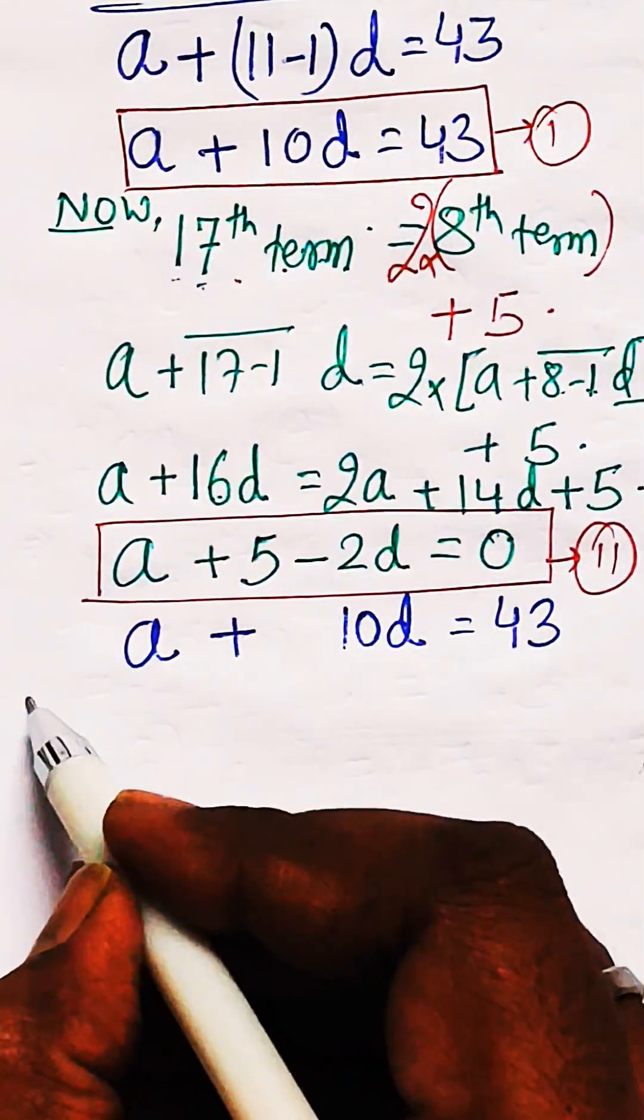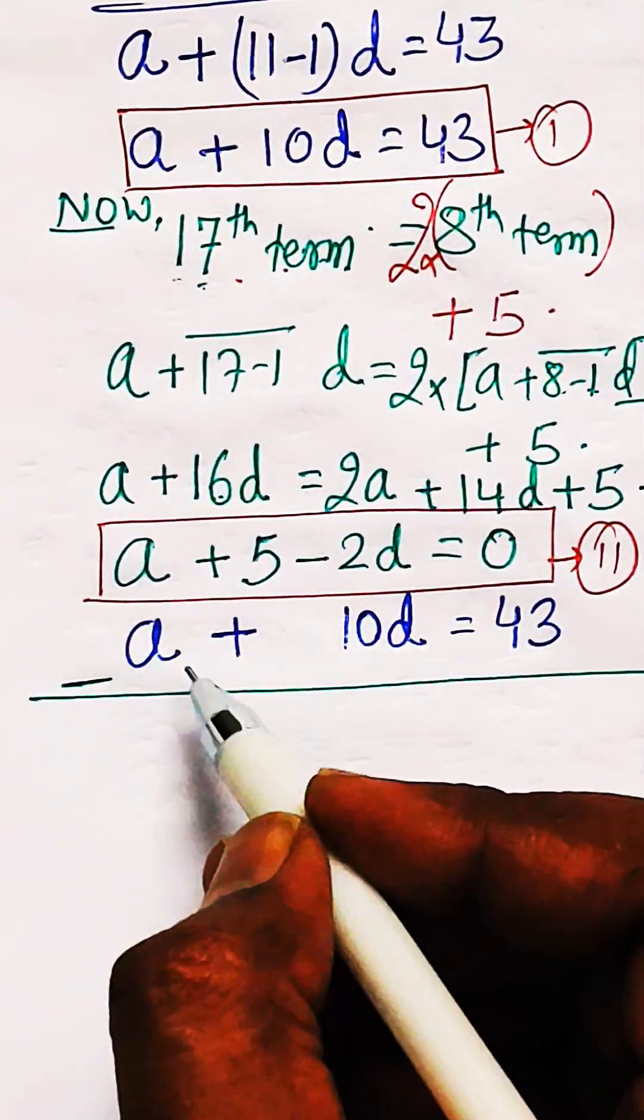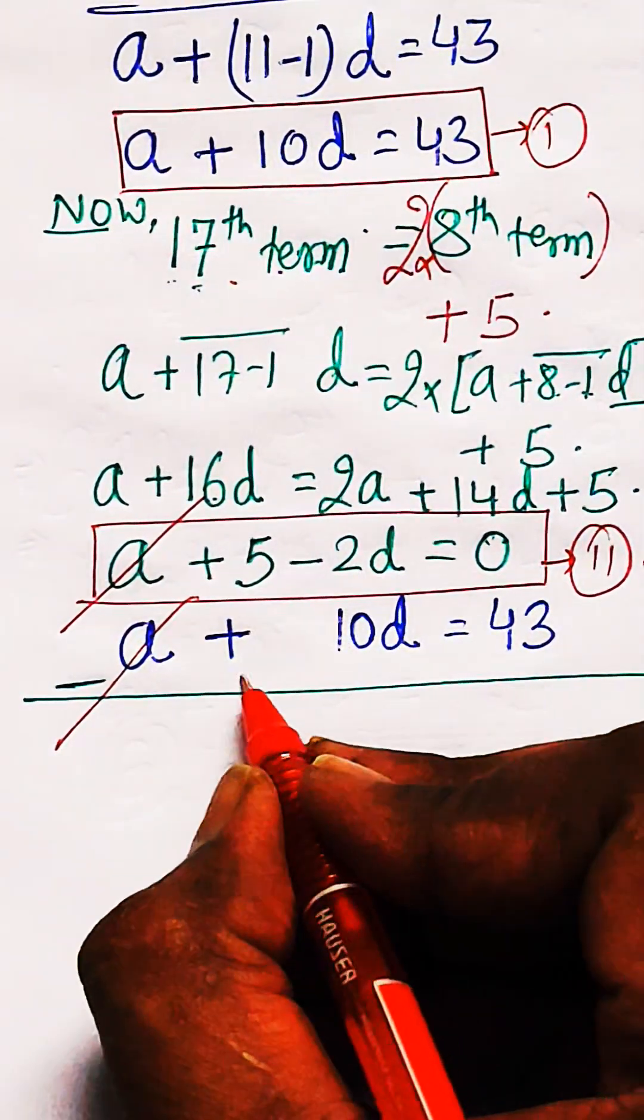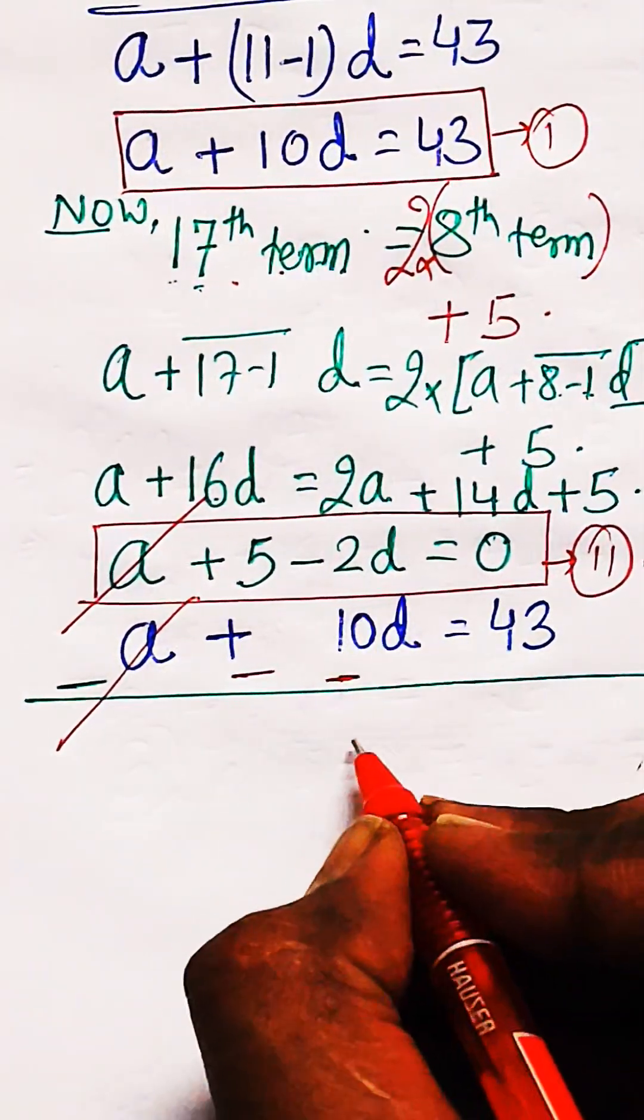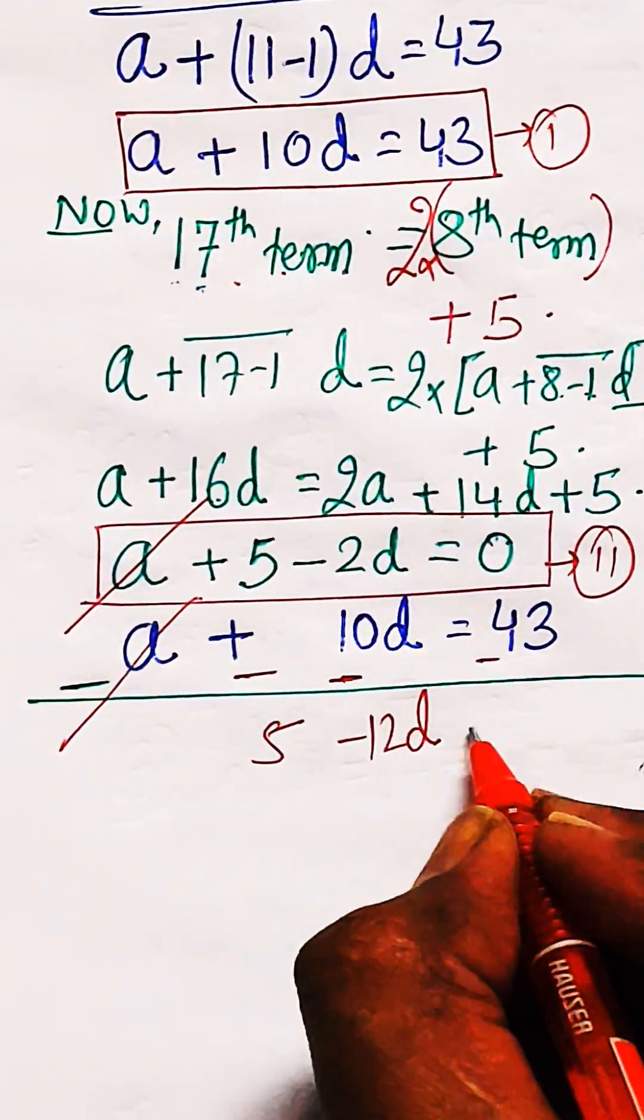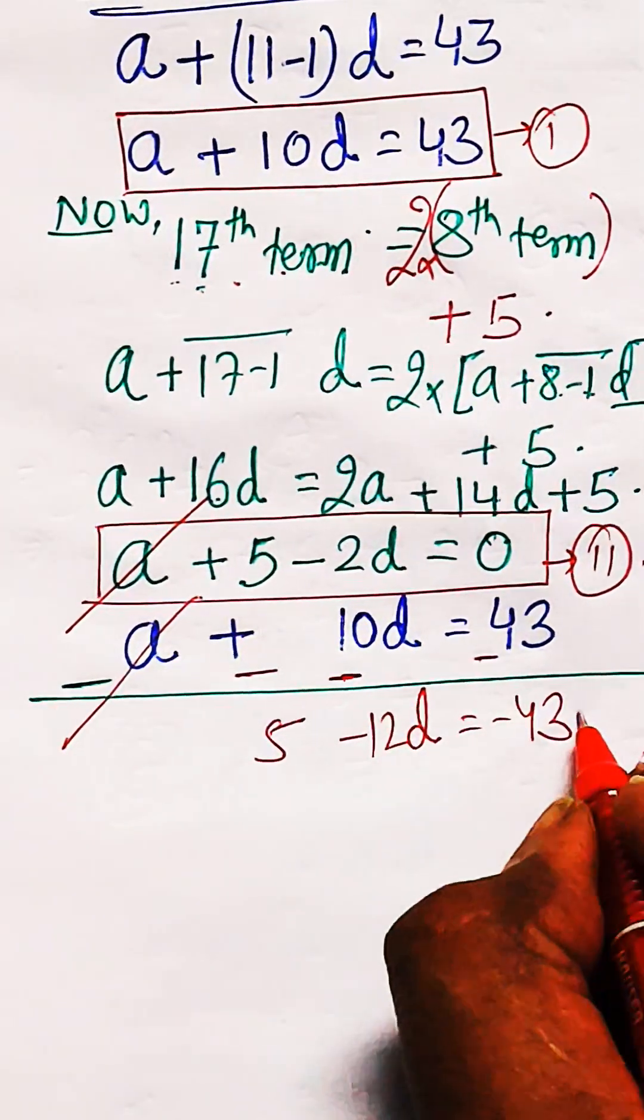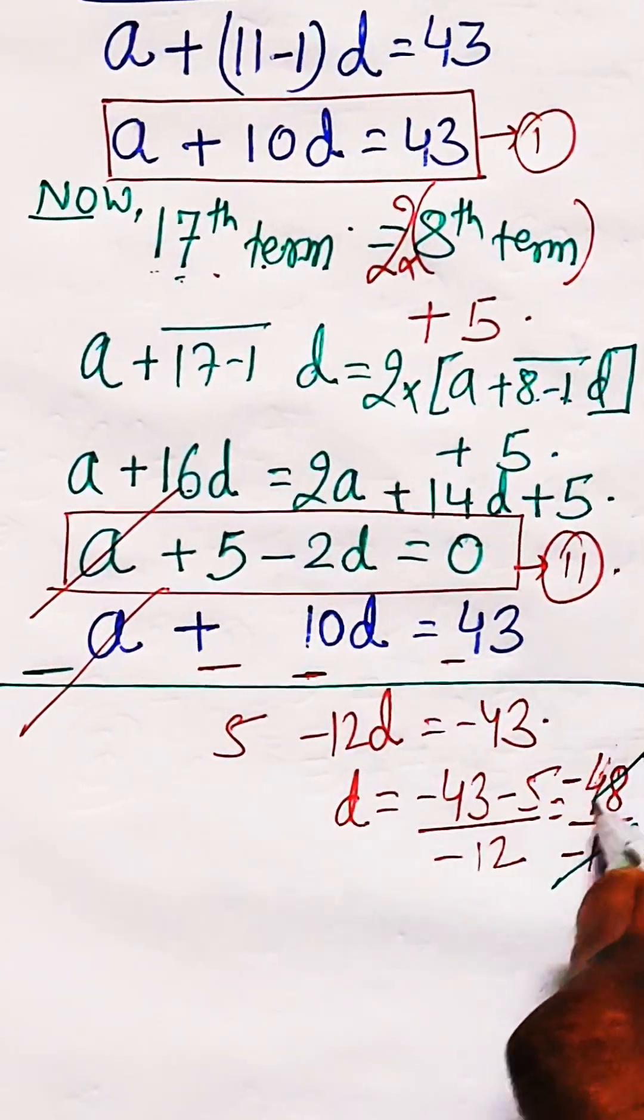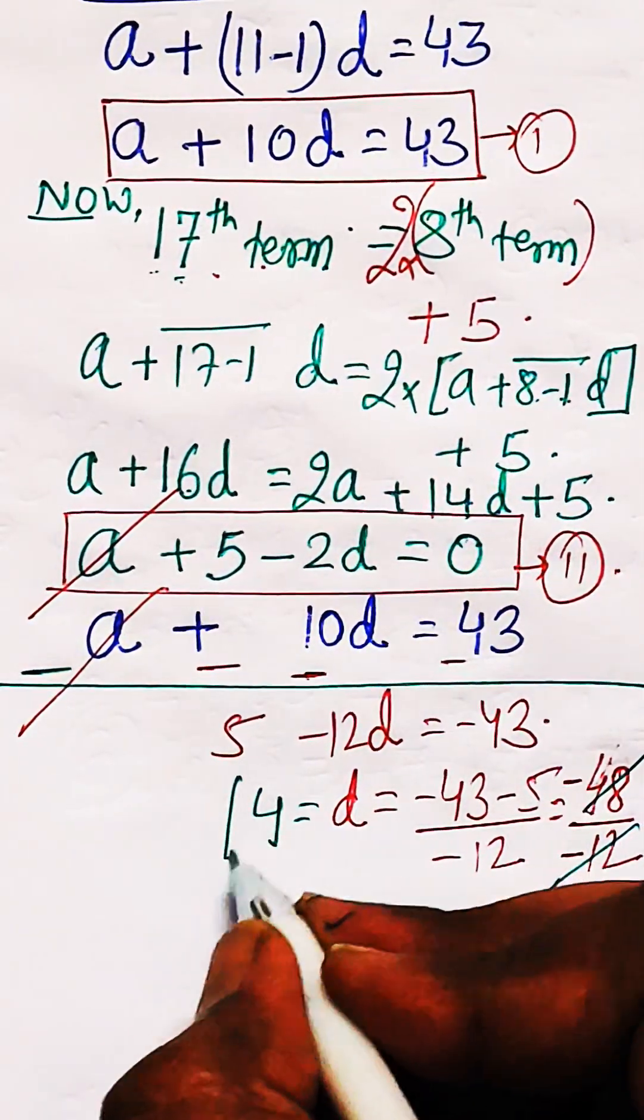When equation 1 is subtracted, A will be cancelled out and we are left with minus 12D equals 5 minus 43. This gives D equals minus 48 by minus 12, which gives you the value of D as 4.